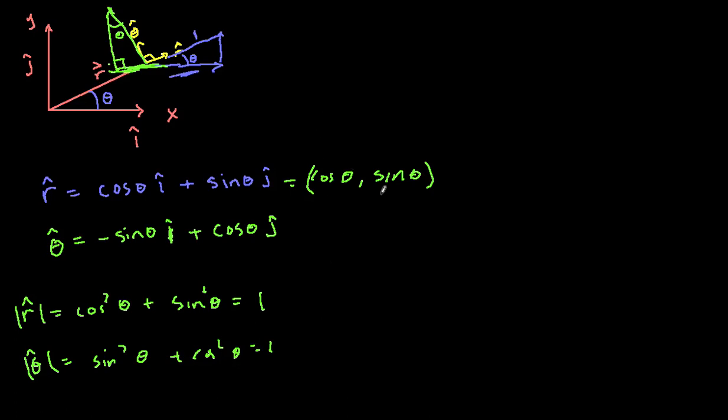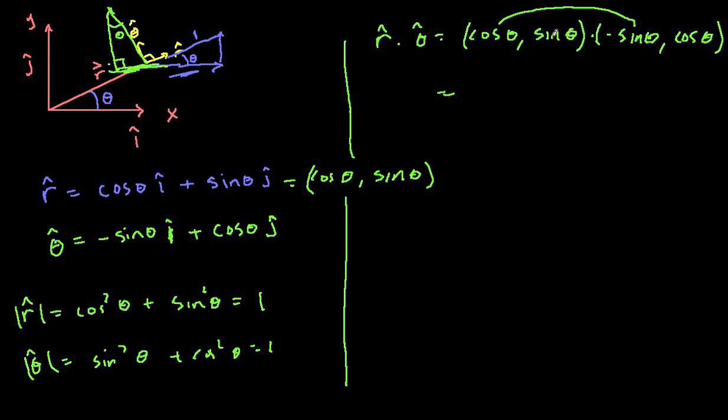Let's look at r hat dot theta hat. That's equal to cosine theta, sine theta times minus sine theta, cosine theta. You only take the same components and add them together, so you're minus sine theta cosine theta plus sine theta cosine theta, so that equals zero. They're actually normal, so they're perpendicular to each other.